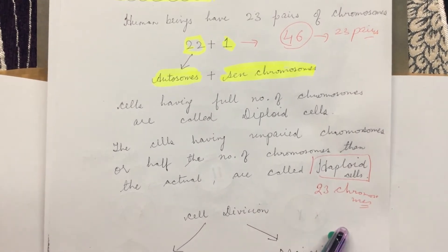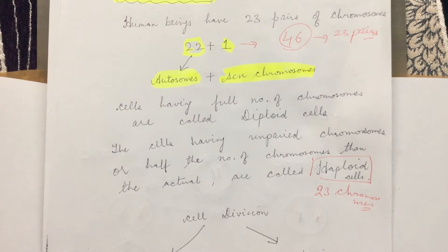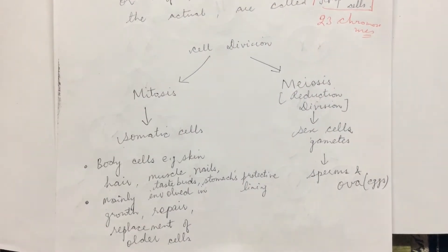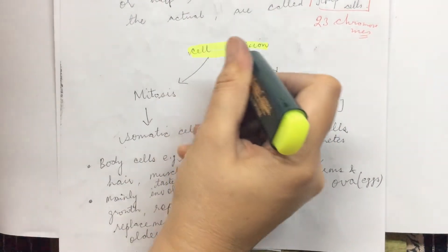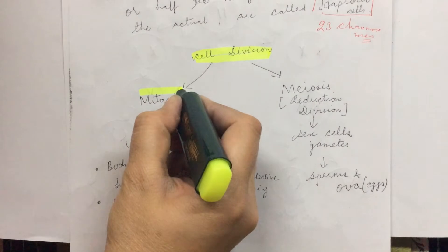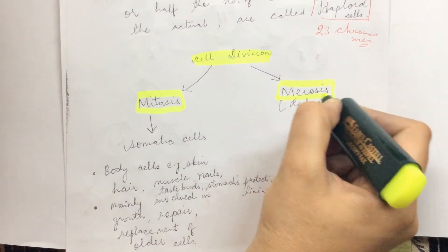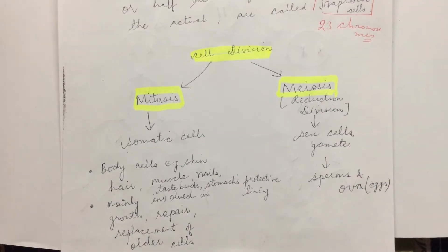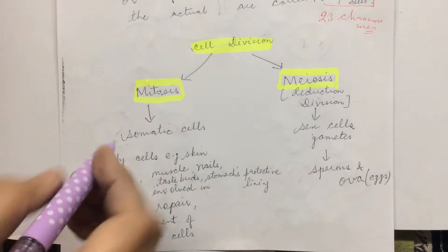Now there are two methods of cell division, and the importance of diploid and haploid conditions is basically based on cell division. Cell division is of two types: first is mitosis, and second is meiosis. Meiosis is also called reduction division. Mitosis occurs in unicellular organisms and somatic cells.